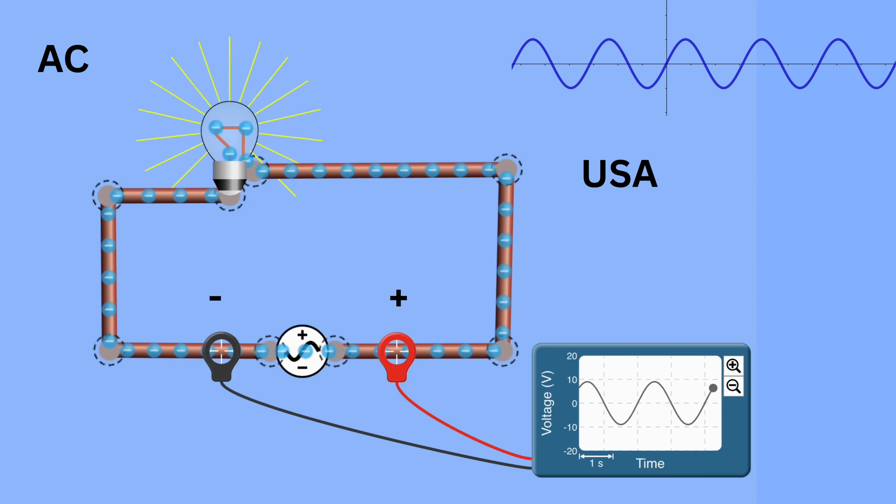Now, in the United States, we have 60 Hz supply, which means the frequency is 60 or 60 cycles every second, so each terminal changes its polarity 120 times per second.